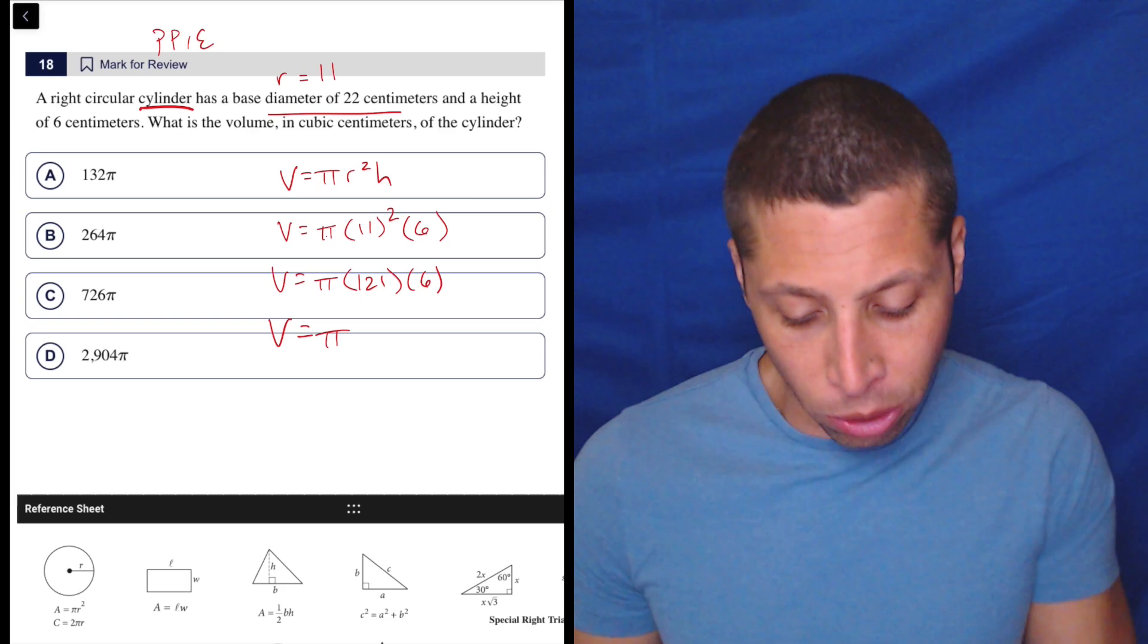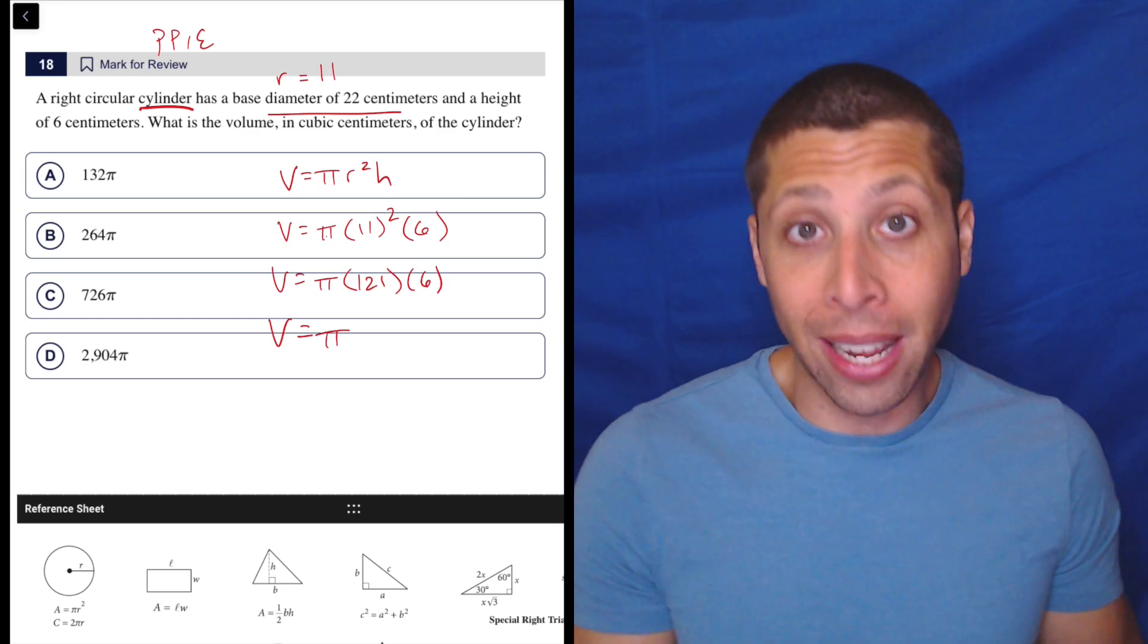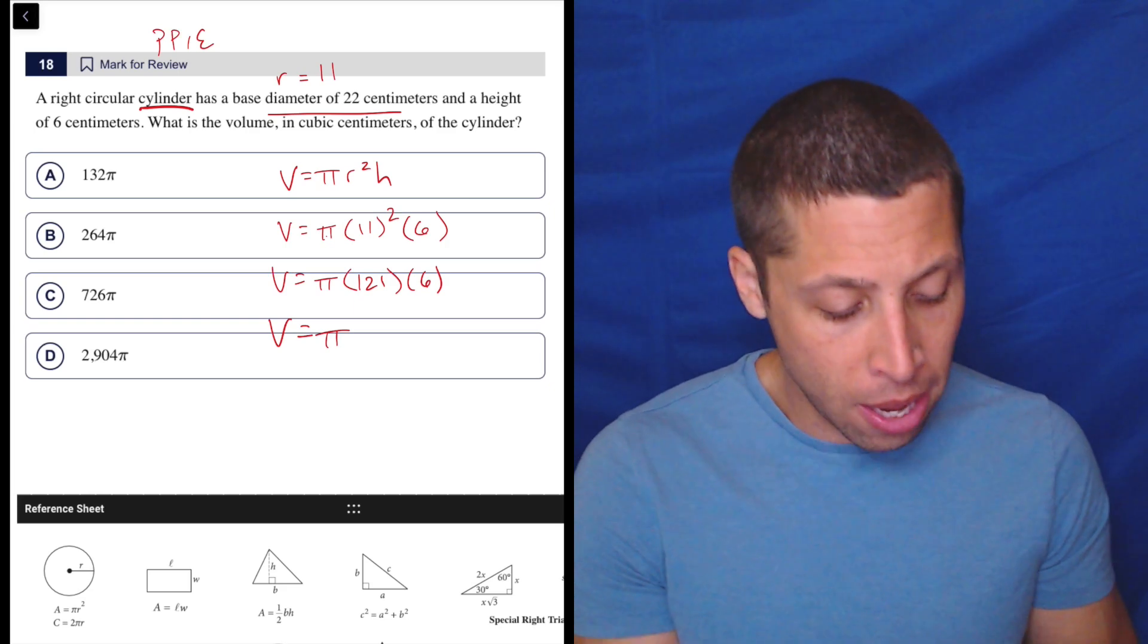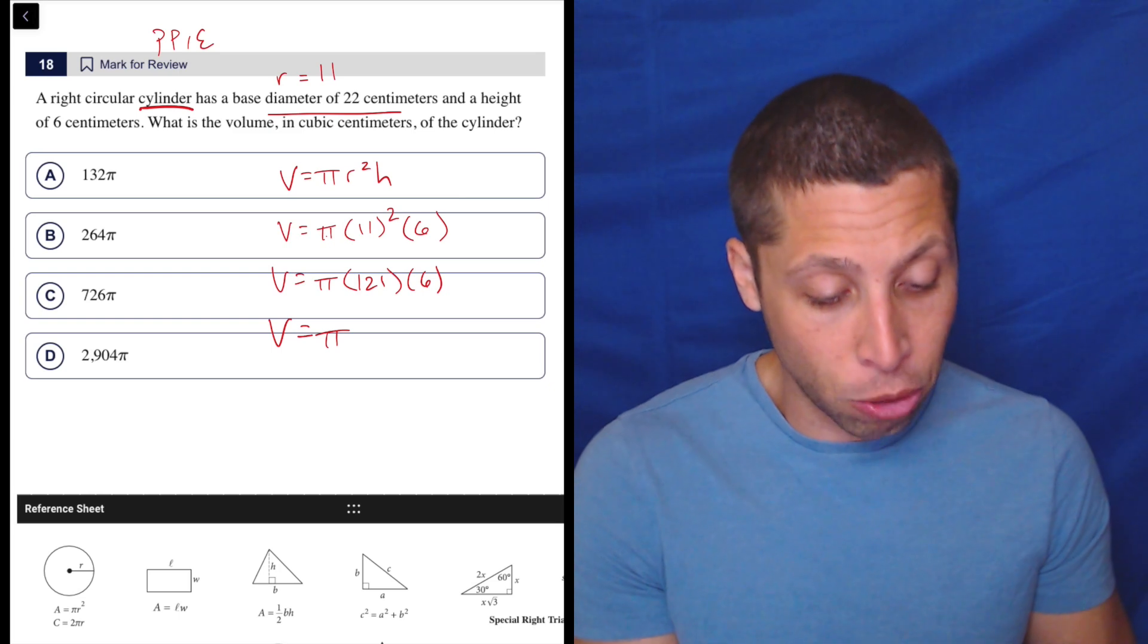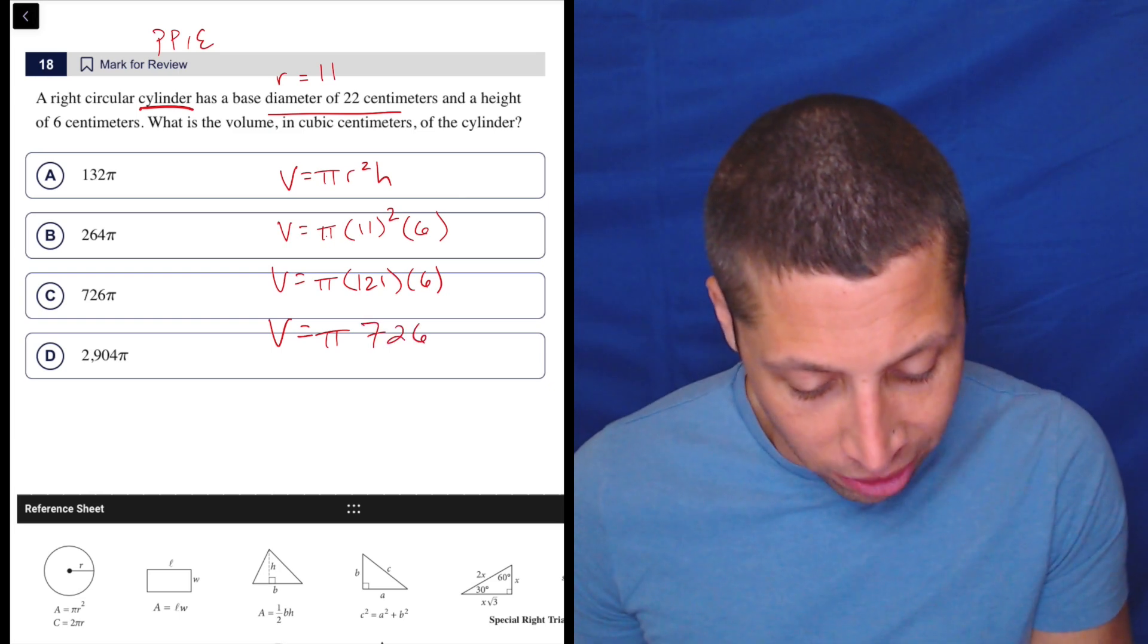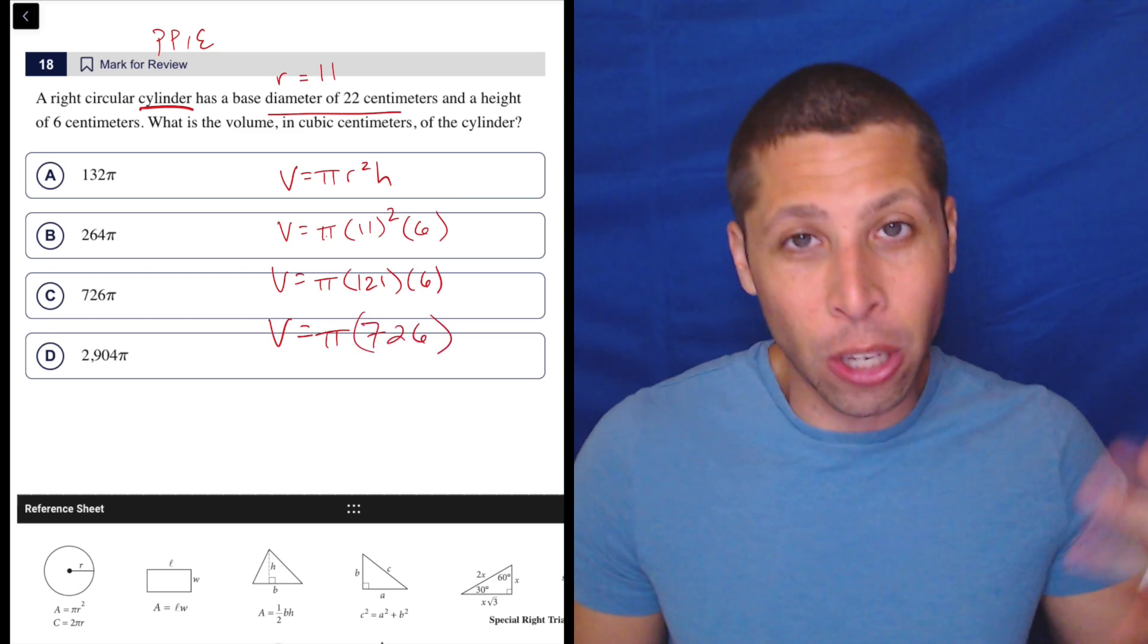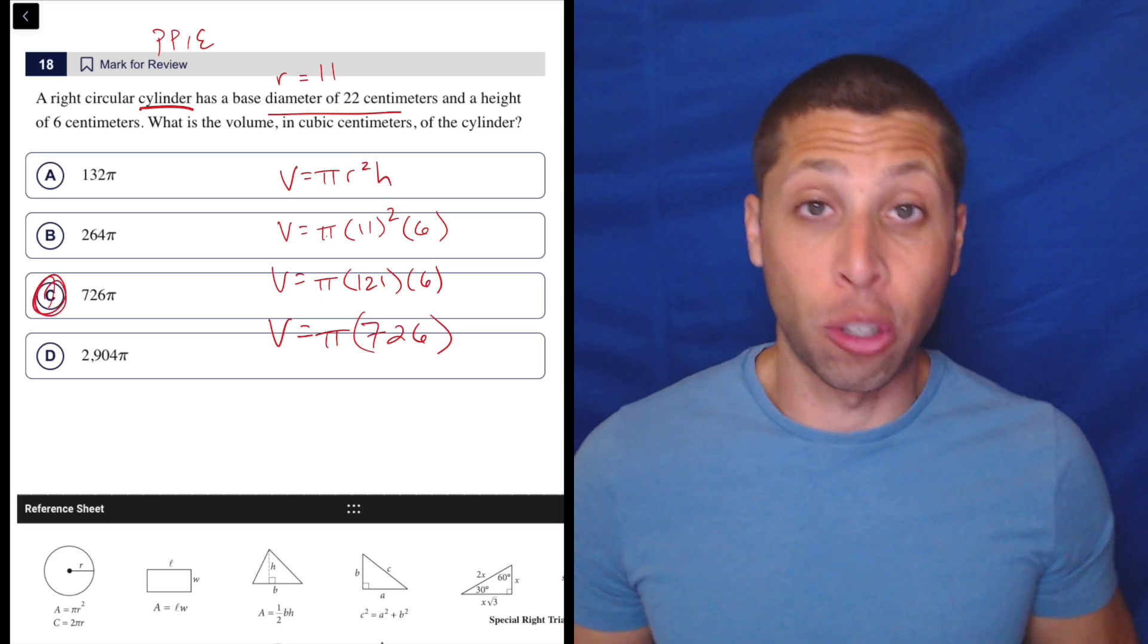So notice the answer choices, too. There's no pi multiplied out, right? It's still a symbol. So we're going to keep it a symbol throughout this whole thing. 121 times 6, I am going to do in my calculator. That is 726. And just for notation reasons, we put the 726 first. And that is choice C.